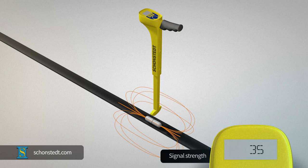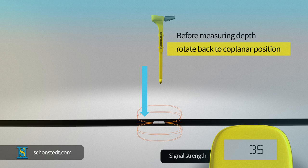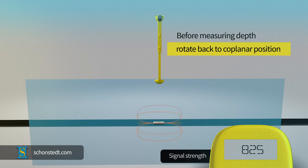At this time, you can attempt to measure the depth with the receiver, but you must remember to rotate the receiver back to a coplanar position, when the signal is strongest, before measuring the depth.